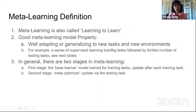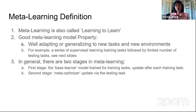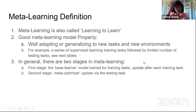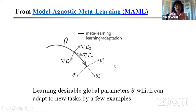The meta-learning definition more specifically is learning how to learn. The goal of a good meta-learning model is adapting or generalizing to new tasks and new environments. There are two stages: the first is the basic learner, which trains on training tasks and updates after each task; and the second is meta-optimization, updated by the testing task. Meta-learning also shares features with transfer learning but is more advanced.